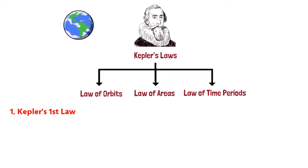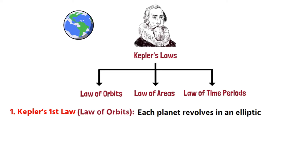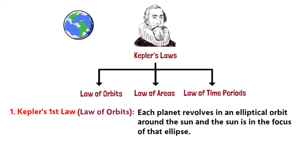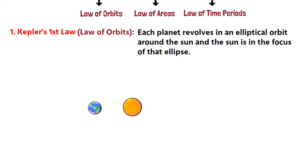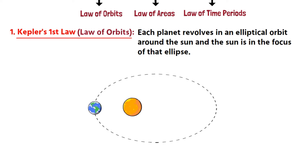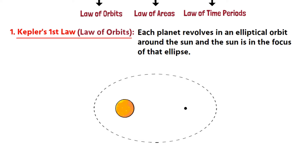Kepler's first law of planetary motion, also known as the law of orbits, states that each planet revolves in an elliptical orbit around the sun, and the sun is at one focus of that ellipse. This means that the orbit of a planet around the sun is an ellipse and not an exact circle. An ellipse has two foci, and the sun is at one of the two foci.